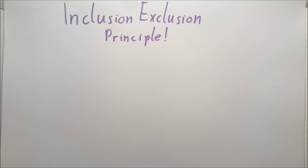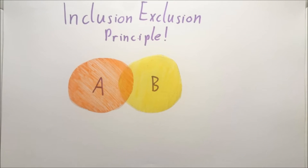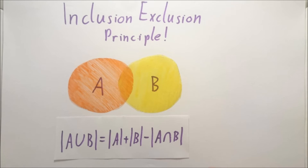Inclusion exclusion principle. We have two sets A and B and we want to try and find the size of the union of both sets. If we added set A and set B you can see that we have counted the intersection of the sets twice so we must subtract this intersection so we only count it once. Now we are left with the union.